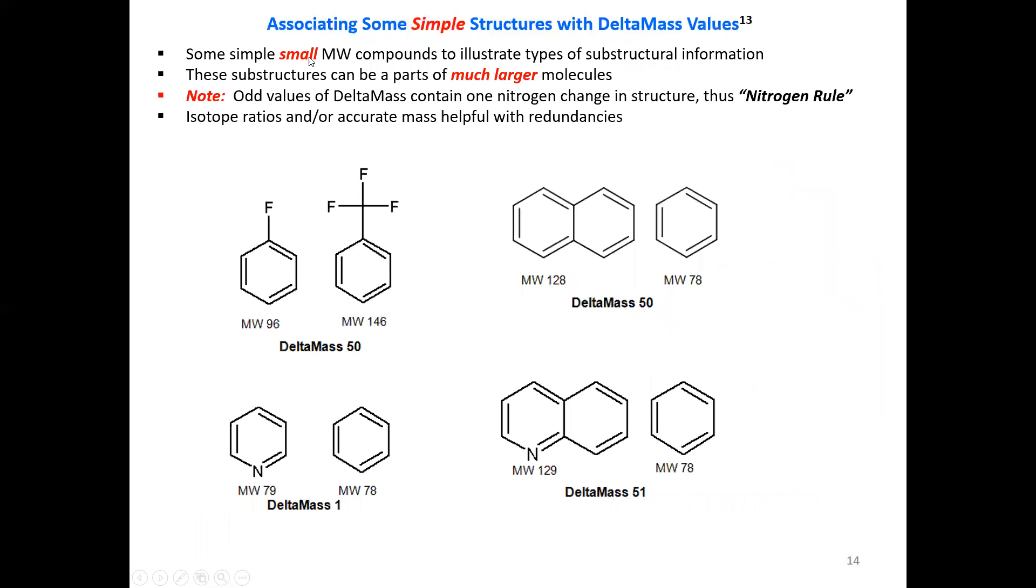So what about delta masses? Some simple small molecular weight compounds are illustrated below. They could be part of a larger molecule. These substructures can be a part of a much larger molecule. The odd value in a delta mass indicates that the nitrogens present in the molecule changed by one. In many cases, you'll need isotope ratios or accurate mass to help with the redundancies. You can see here, this is would be a little harder to know that a delta mass 50 indicated the replacement of a fluorine by a CF3 group. Or if you had a benzene that now is a naphthalene system, the delta mass would be 50.